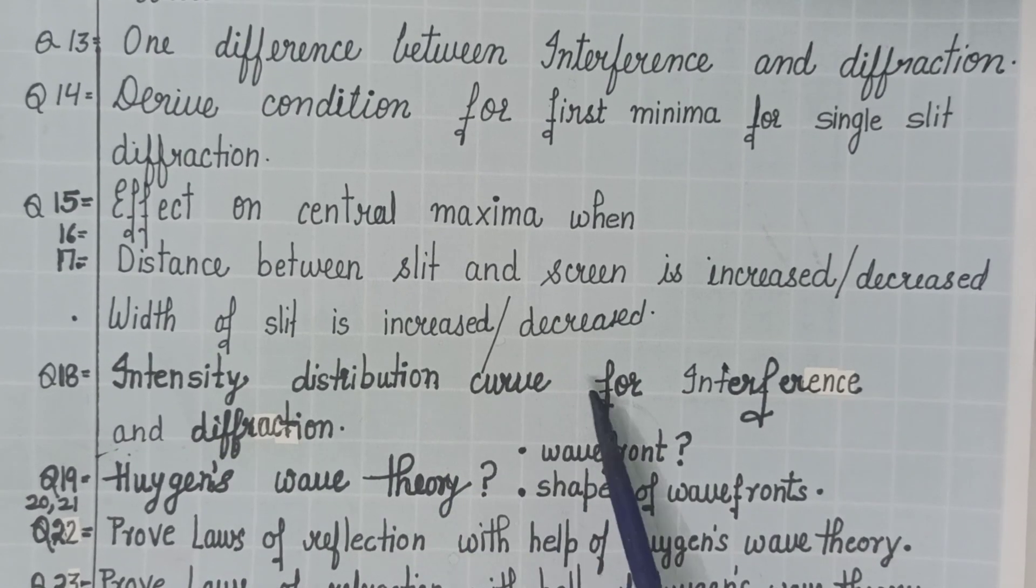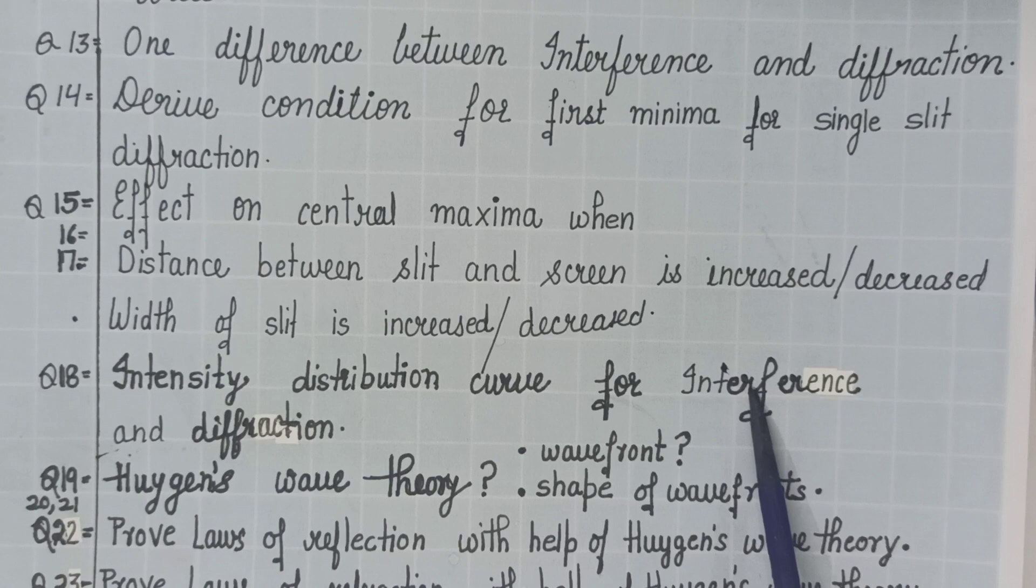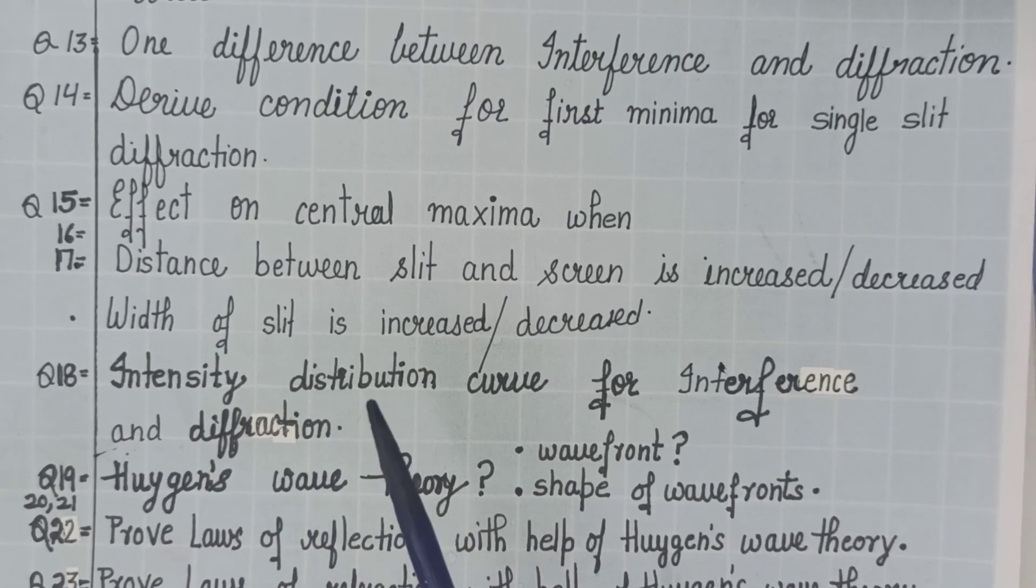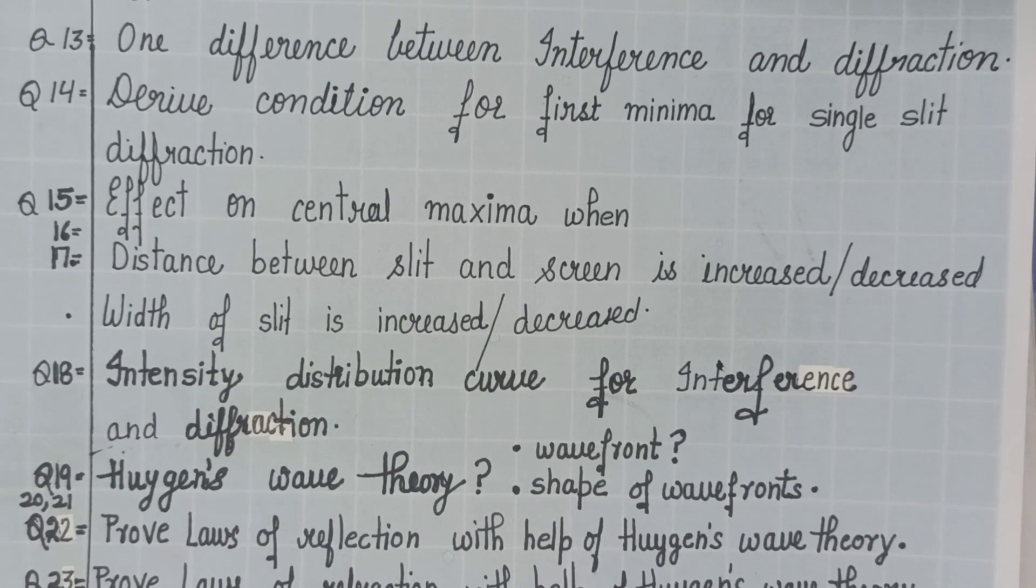Then, intensity distribution curve for interference Young's double slit experiment as well as for diffraction. Both the curves, both the graphs you can say, are very, very important.